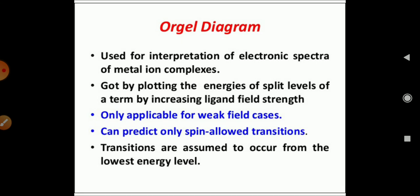Today's topic is the Orgel Diagram. The Orgel Diagrams are used to interpret the electronic spectra of metal-ion complexes by plotting the energy of split levels of the term by increasing ligand field strength. This kind of diagram is only applicable for weak field cases. It can only predict the spin-allowed transition.